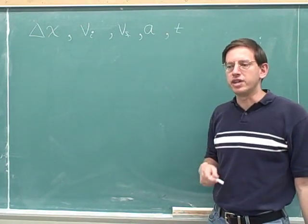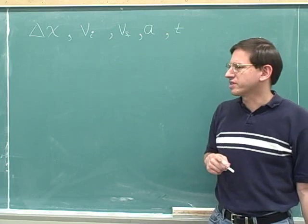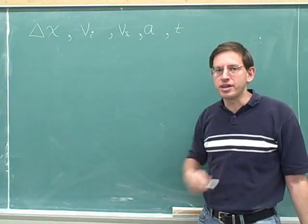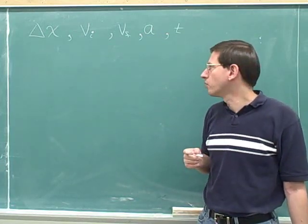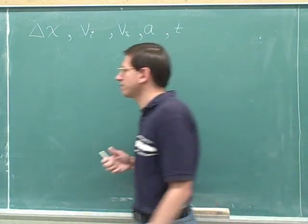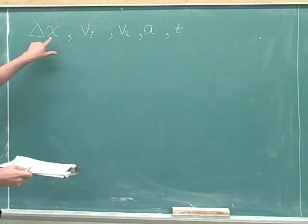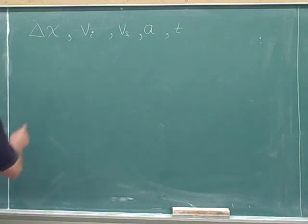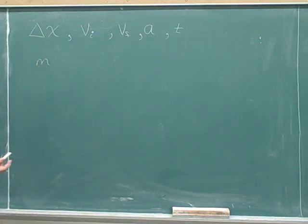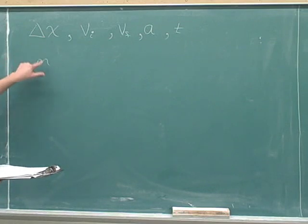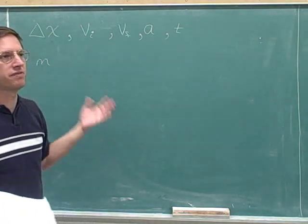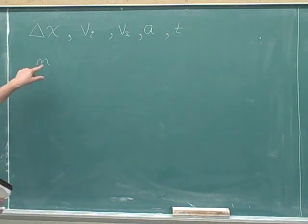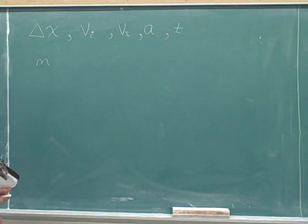Let's go through and discuss the units for these variables. If you've already been exposed to this material, you should already have the units memorized. We're going to go through the official SI units for each variable. The SI units for displacement are meters, abbreviated as m. Of course, you could measure displacement in feet or yards or miles, but the official standard units are meters.